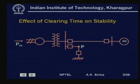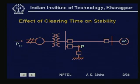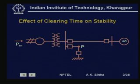We will start with the problem of effect of clearing time on stability. In the last lesson, we talked about how the magnitude of a disturbance can affect the stability of the system. Here, we will discuss how clearing time can affect stability. When a fault occurs in the system, if we clear the fault quickly, the system may remain stable. If we take more time to clear the fault, the accelerating or decelerating power remains for a longer period and the system may become unstable.